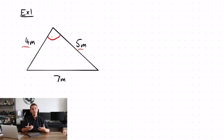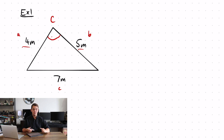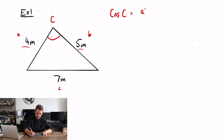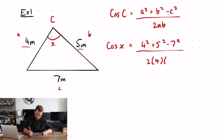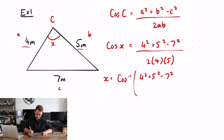To find the angle at the top I need to use the cosine rule. My unknown angle is C, the side opposite is lowercase c, and my other two sides are a and b. I've got three sides and I want to find the angle. Using the rearranged cosine rule: cos C equals A squared plus B squared minus C squared over 2AB. So cos X equals 4 squared plus 5 squared minus 7 squared over 2 times 4 times 5. Therefore X equals inverse cos of that, giving an angle of 101.5 degrees.